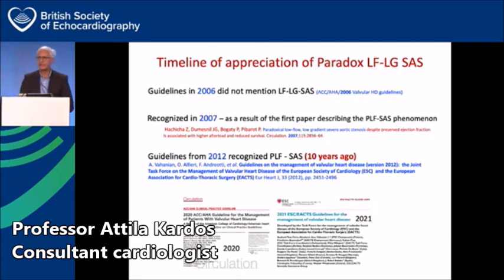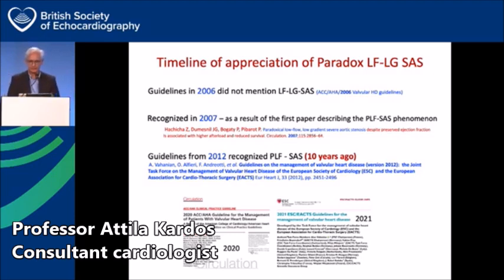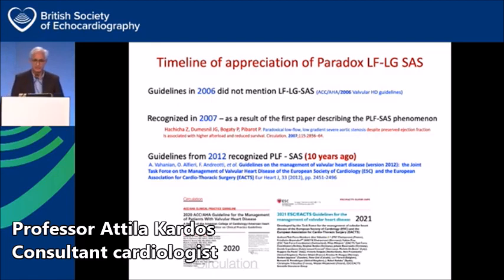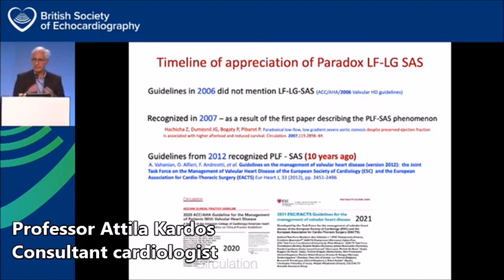There was no data to address this until 2007, when a seminal paper by Hachicha's group in Canada examined these discrepant severe aortic valve cases — the paradoxical low flow, low gradient, severe aortic valve stenosis patients despite preserved ejection fraction. They described clinical characteristics and outcomes, introducing the PLF low flow, low gradient severe AS nomenclature. Not until five years later, in 2012, did European guidelines endorse and acknowledge this entity. From then it has been incorporated into all subsequent valvular heart disease management guidelines.